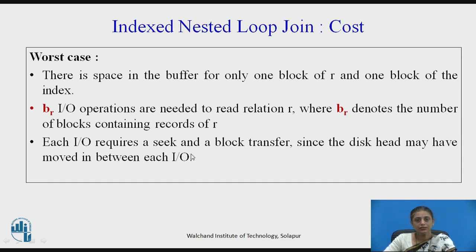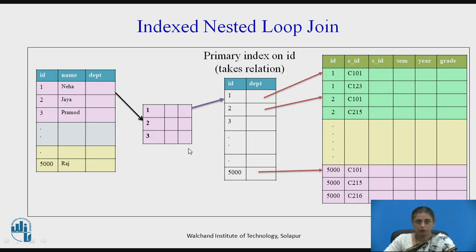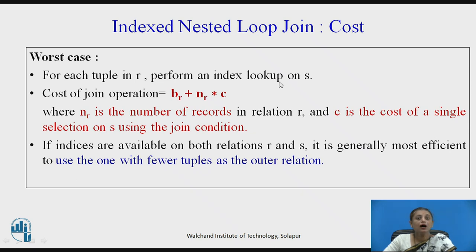Since the disk head has to move, each operation requires one seek and one block transfer. One block of R is brought to main memory and for every tuple in that block, a lookup is performed on the index of S. So the cost of the join operation is BR plus NR × C, where NR is the number of records in relation R and C is the cost of a single index-based selection on S using the join condition.